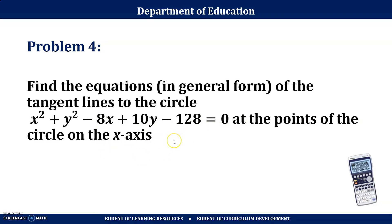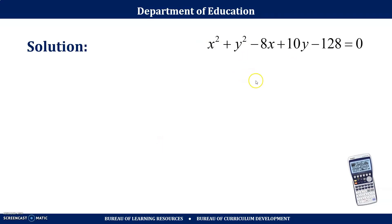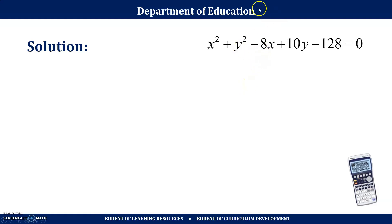Since we are given a general equation, we can convert this into standard form. From the standard equation we can determine the center and the radius. So let's do it by completing the square.